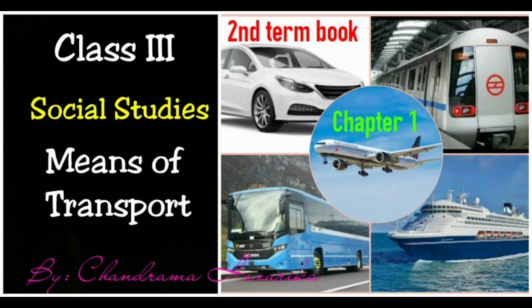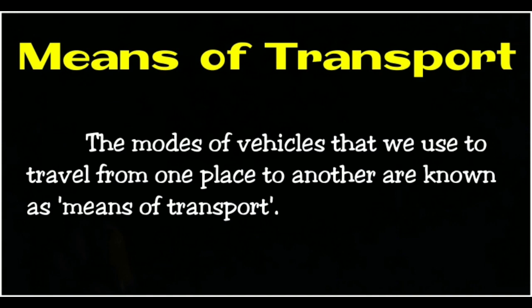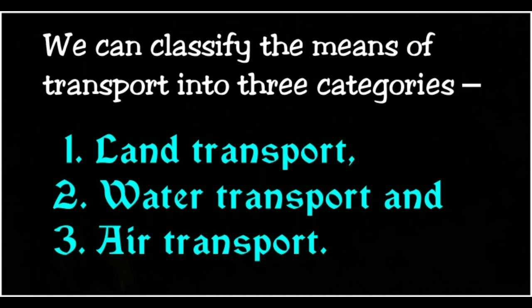Hello dear students. Today in this video I am going to explain Class 3 Social Studies, Chapter 1: Means of Transport. The modes of vehicles that we use to travel from one place to another are known as means of transport. We can classify the means of transport into three categories: land transport, water transport, and air transport.